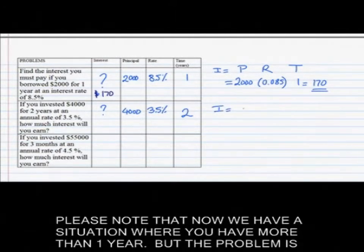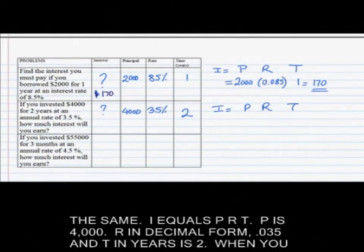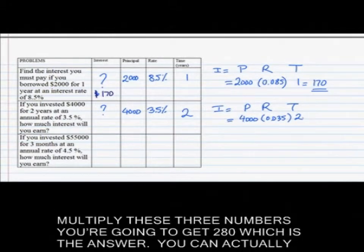Please note that now we have a situation where you have more than one year, but the problem is the same. I equals PRT, so P is 4000, R in decimal form is 0.035, and T in years is 2. When you multiply these three numbers, you're going to get 280, which is the answer.